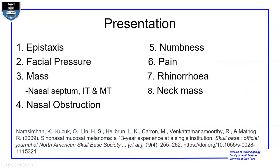In terms of presentation, the commonest symptoms are epistaxis and nasal obstruction. Patients also present with facial pressure and a nasal mass, usually located at the anterior nasal septum, the inferior turbinate, and the middle turbinate. They can present with numbness — for example, if the tumor involves the infraorbital nerve. Pain is also expected, as with cancers generally, and there can be rhinorrhea and a neck mass, though these are much less frequent.